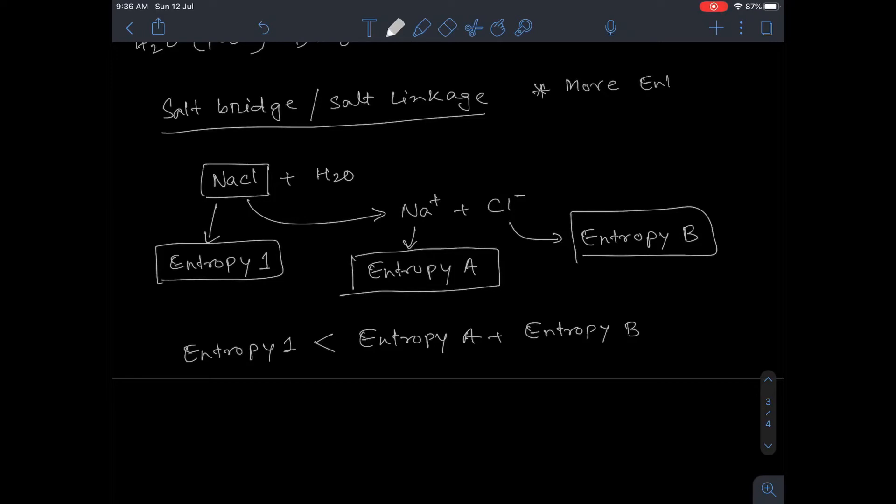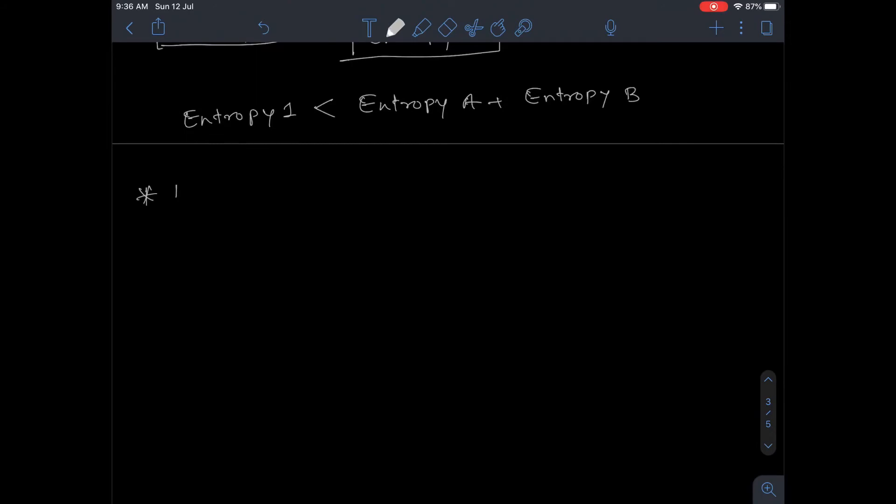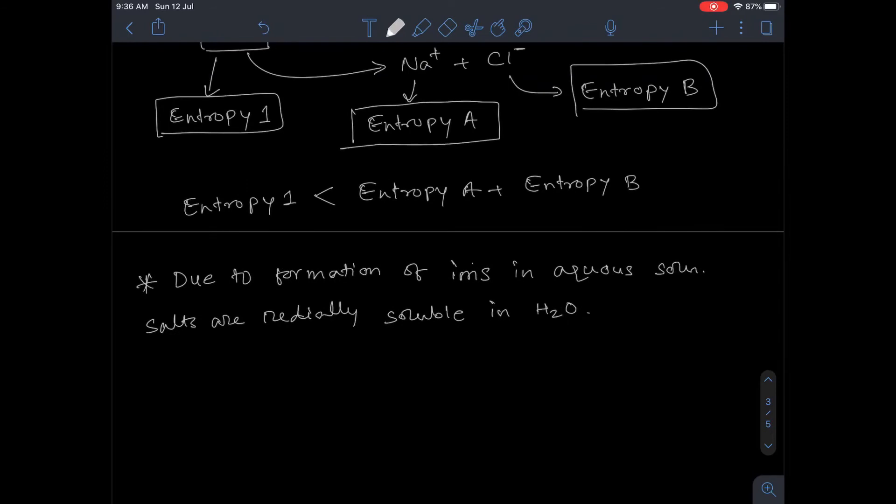We know that more entropy means more solubility, and this is the reason why NaCl, when present in aqueous solution or water, is readily soluble. All salts are readily soluble in water because they disintegrate into ions, and the ions have a cumulative entropy which is more than the entropy of the salt.